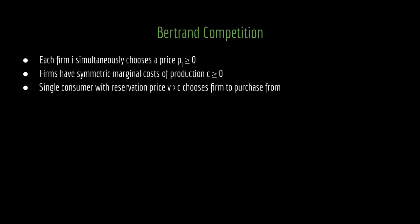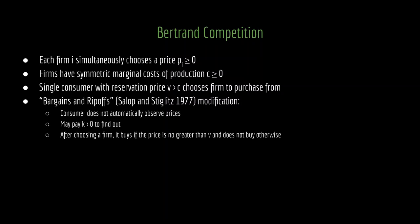That's weird. So we're going to modify this Bertrand competition model to relax that assumption, and specifically, we're using the bargains and rip-offs modification. Here, the consumer does not automatically observe prices, but there is something that the consumer can do about this. Specifically, the consumer may pay a cost K greater than zero to learn the pricing information.